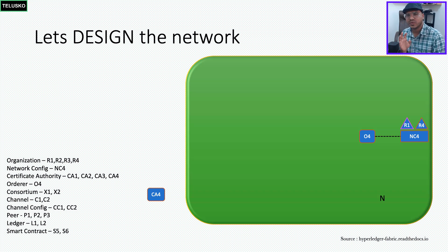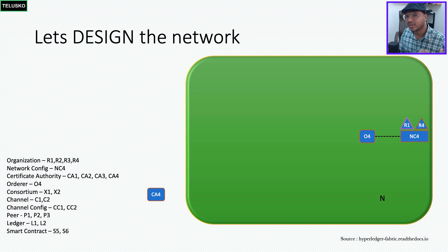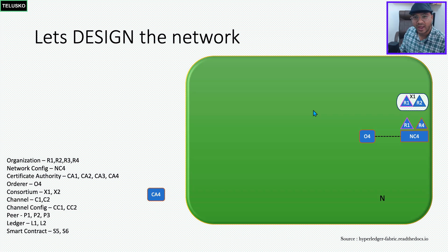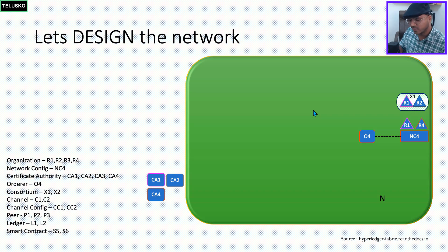To handle privacy, we can create channels. But before going to channels, we first need to create a consortium. A consortium is a collection of multiple organizations trying to achieve the same goal. Here, R1 and R2 want to build their own consortium — let's call it X1. Since we have these two organizations, we also need CAs for them: CA1 is responsible for giving certificates to the components of R1, and CA2 is responsible for R2.